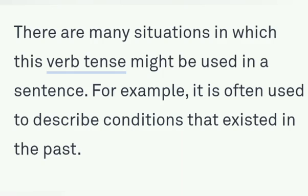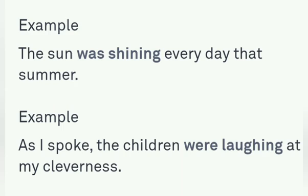There are many situations in which this verb tense might be used in a sentence. For example, it is often used to describe conditions that existed in the past — what was happening at a certain time in the past. One example is: the sun was shining every day that summer.